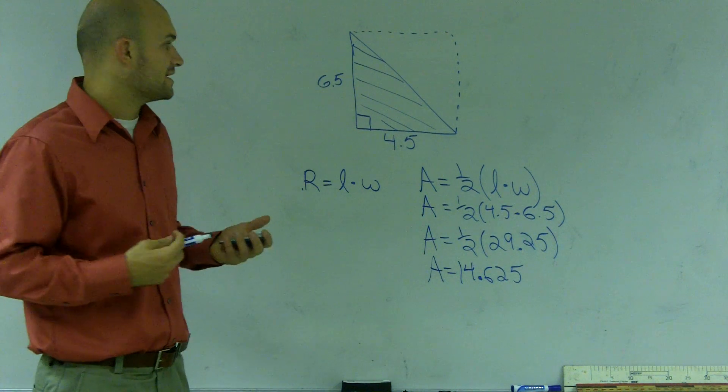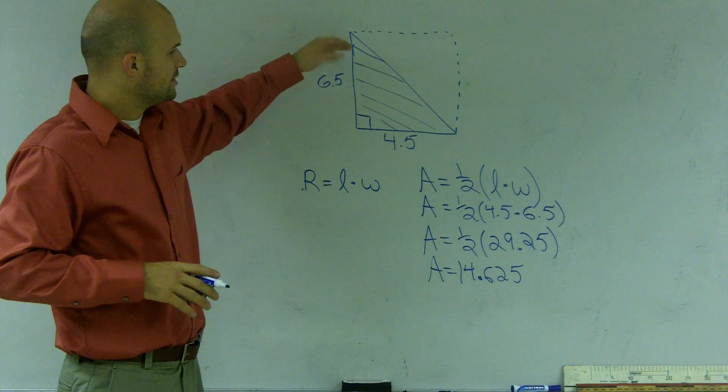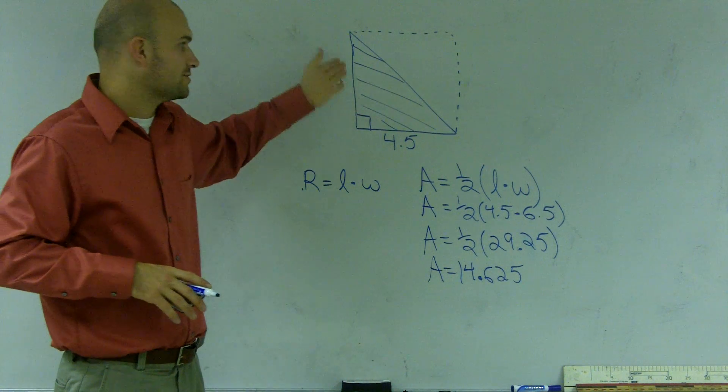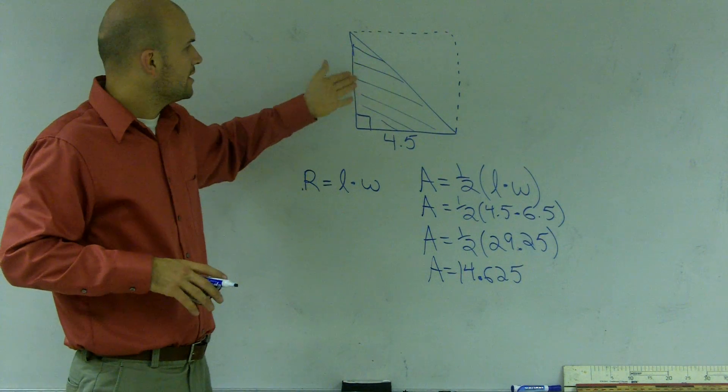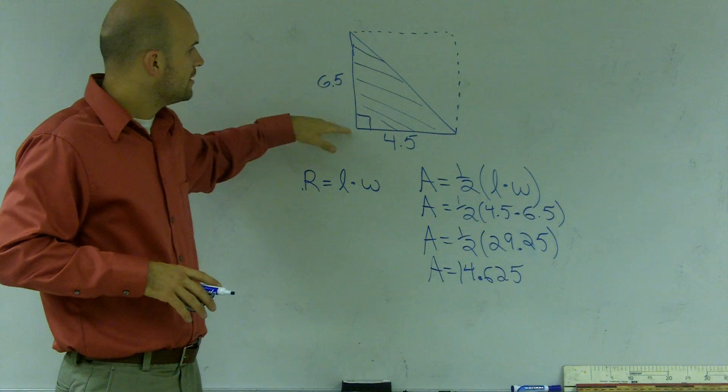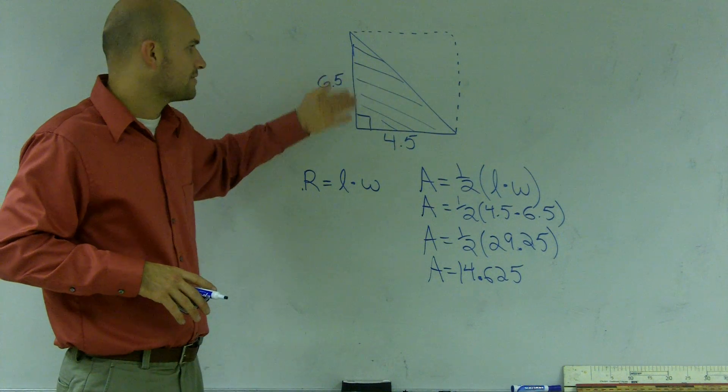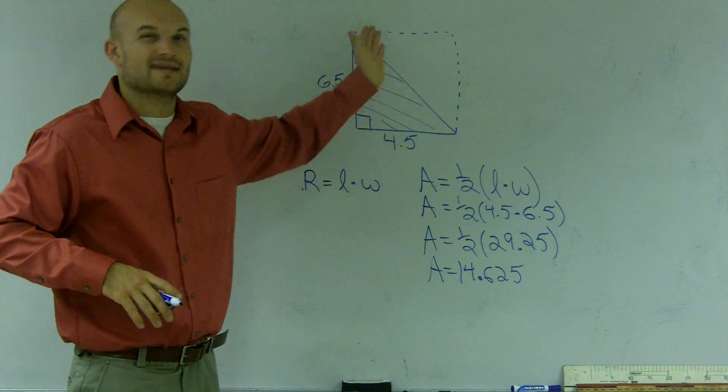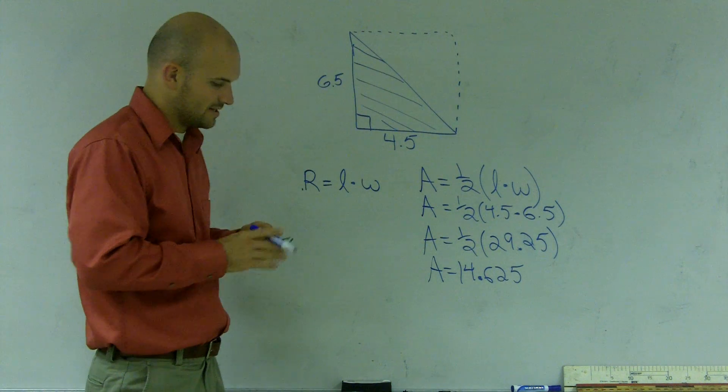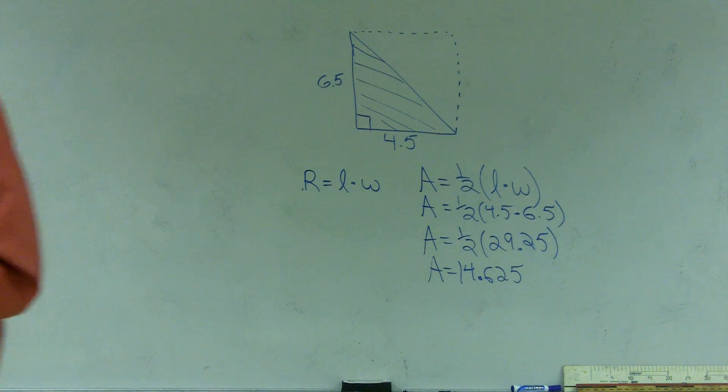So again, remember just to find the area of a triangle, just take, if you're looking at a rectangle, or if it's a right triangle, you can find just half of the length times the width, and then multiply by half as it represents half of a rectangle. That's only for right triangles when it has a right angle.